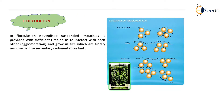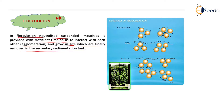The next process is flocculation. When we add the coagulant and after providing rapid mixing, we need to provide slow mixing for floc formation. In flocculation, neutralized suspended impurity is provided with sufficient time so as to interact with each other — that is known as agglomeration — and grow in size, which are finally removed in the secondary sedimentation tank. We need to provide slow mixing to give sufficient time for all the particles to interact, and when they grow in size, they are removed in the secondary sedimentation tank as flocs.